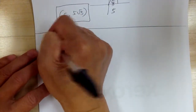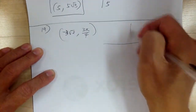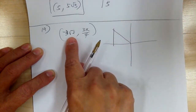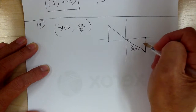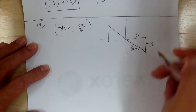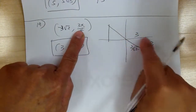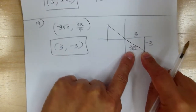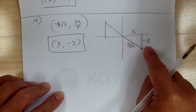Number 19: you have negative 3√2, 3π/4. You can draw that. So 3π/4 is right over here — it's a 45-45 degree triangle. The radius is negative, so you have to flip it over to here. It's a 45-45 triangle with hypotenuse 3√2, so the two sides are 3 and 3. Watch the sign: this point is going to be at 3, negative 3.